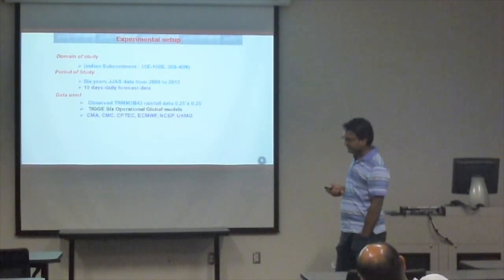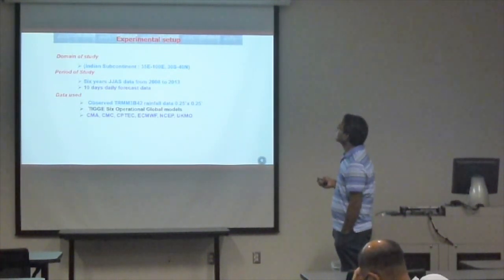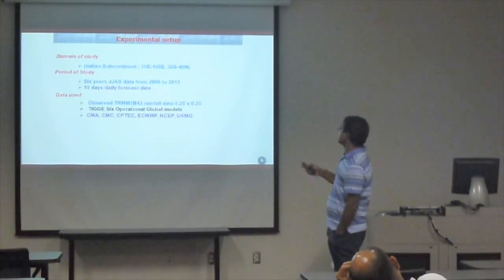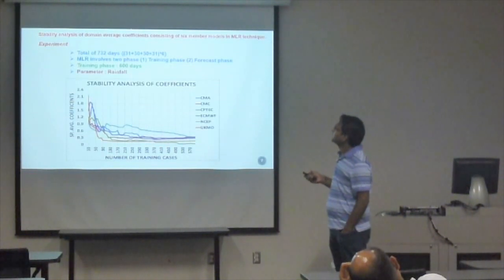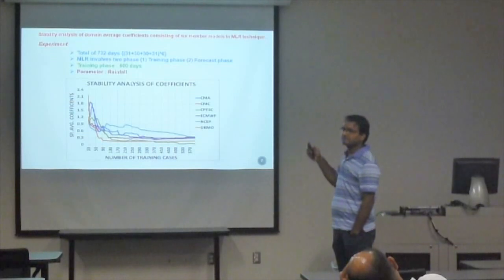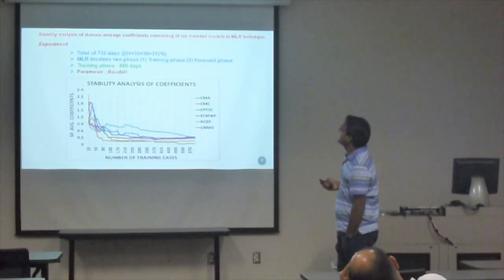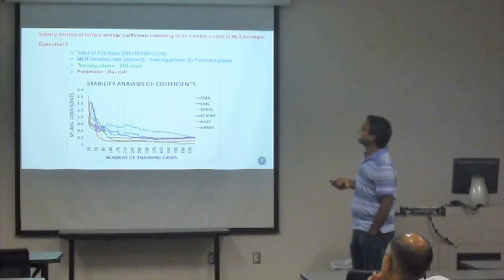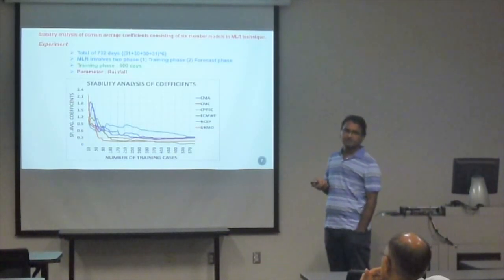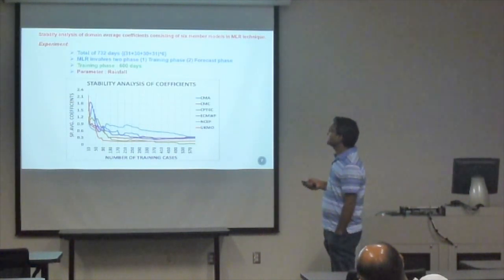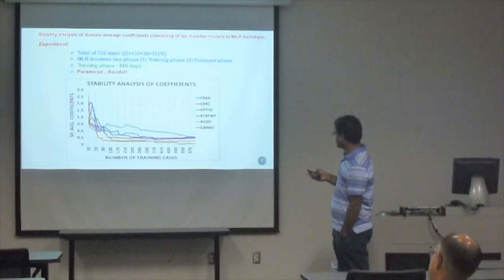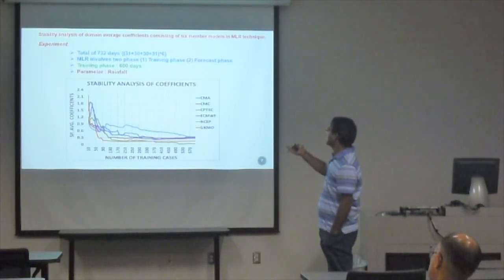For the experimental setup, we used six global model datasets downloaded for six years. There are a total of 732 days of data for the JJAS season. Multi-linear regression involves two phases: the training phase and the forecast phase. During the training phase, we need to obtain stable coefficients. We checked the convergence of the coefficients by incrementally adding cases, and the figure shows these coefficients stabilize after approximately 500 cases.